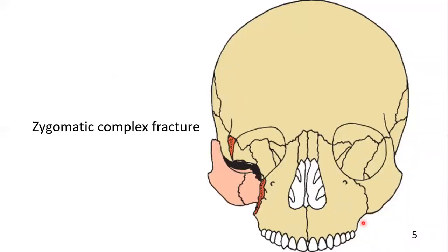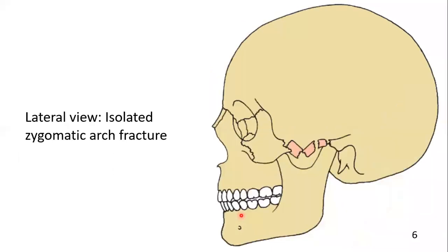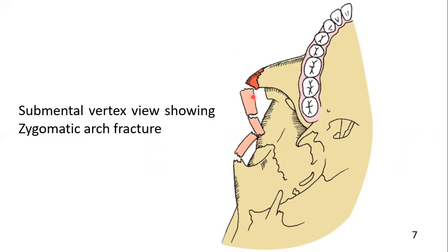Here you can see a zygomatic complex fracture, and in this diagram you can see an isolated zygomatic arch fracture. Although it is comminuted — this zygomatic arch is broken up in pieces — the rest of the zygomatic bone is intact and you cannot appreciate any fracture. This is the suture line of the zygomatic bone. Here you can see a depressed or V-shaped zygomatic arch fracture, again isolated, and in this submental vertex view you cannot appreciate the rest of the zygomatic bone fracture.